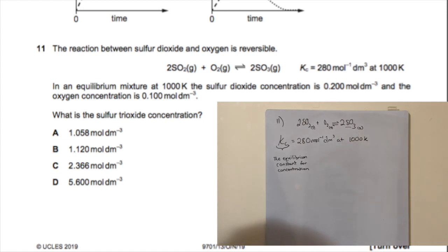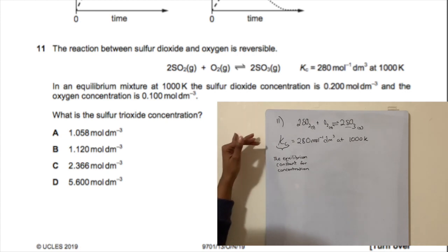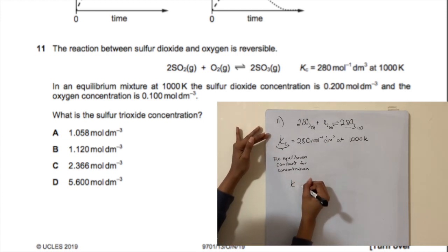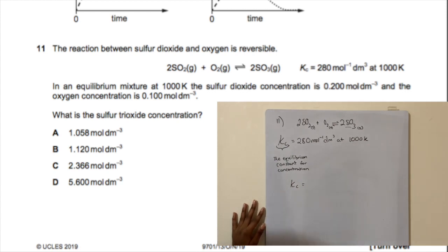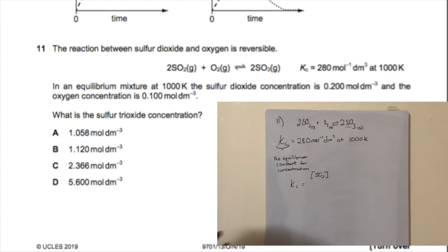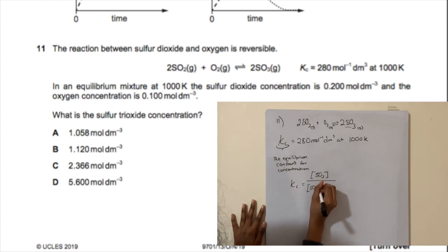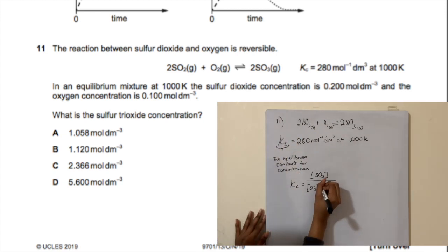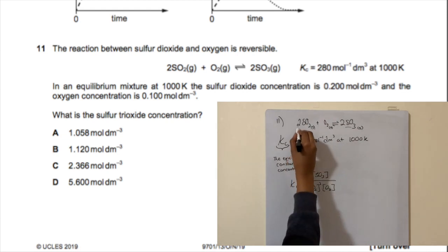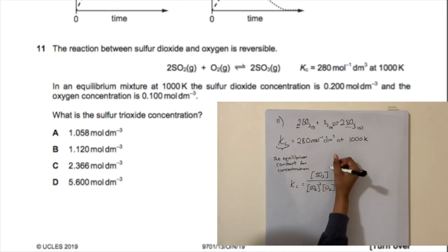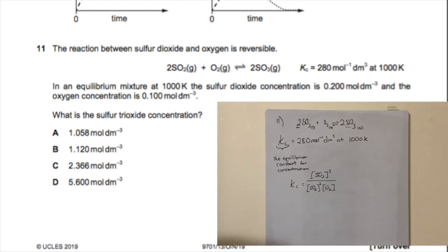We're asked for the concentration of sulfur trioxide. To find it, we use the Kc expression: Kc equals the concentration of the product SO₃ over the concentration of the reactants SO₂ times O₂. Since the coefficient of SO₂ is two, it's squared; same for SO₃ — it's also squared.